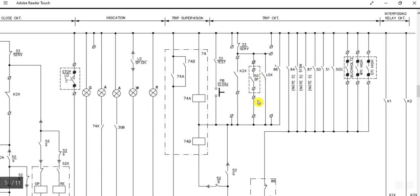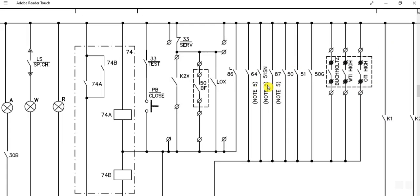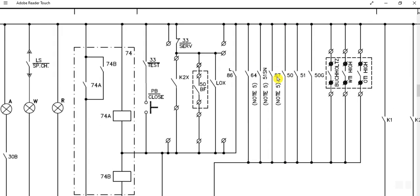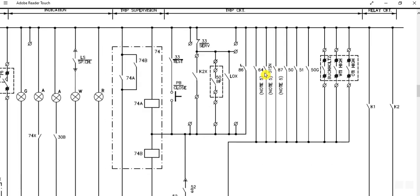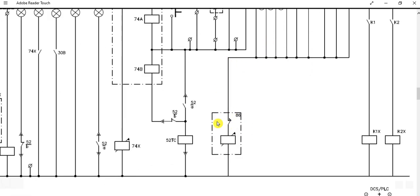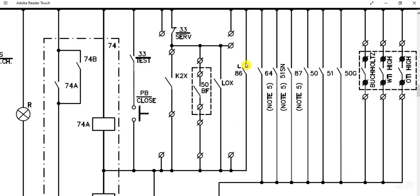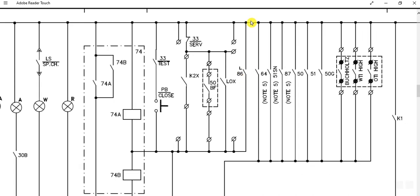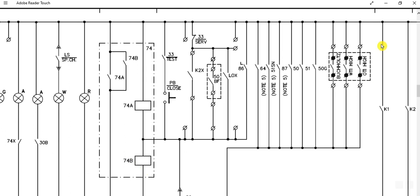This is the protection path. This is the 86 lockout relay. If the lockout relay operates, the circuit breaker will be tripped. If the 87 differential protection operates, or the 64 RDF transformer protection operates, or the 51 inverse time phase overcurrent, or 50 instantaneous phase overcurrent, or the ground element operates — if any of these relays operate, they will trip the 86 lockout relay, and the 86 relay contact will close, tripping the circuit breaker.